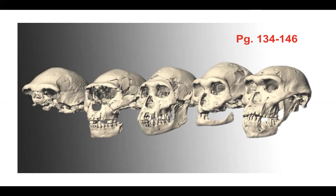Using ImageJ, we're able to take measurements of images that we upload. We're going to review the information in your lab manual on pages 138 to 140 that explains how to take these measurements, and we'll also review the evolutionary basis for some of these traits.